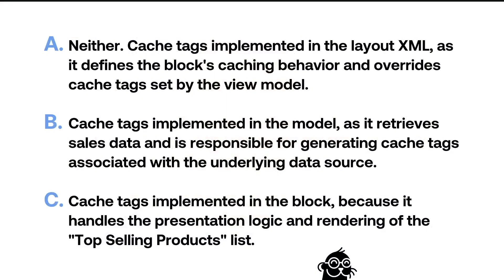So now let's take a look at the possible answers. For answer A, it would be neither — cache tags implemented in the layout XML, as it defines the block's caching behavior and overrides cache tags set by the view model. Option B, cache tags implemented in the model, as it retrieves sales data and is responsible for generating cache tags associated with the underlying data source. Finally, option C, cache tags implemented in the block, because it handles the presentation logic and rendering of the top-selling products list.